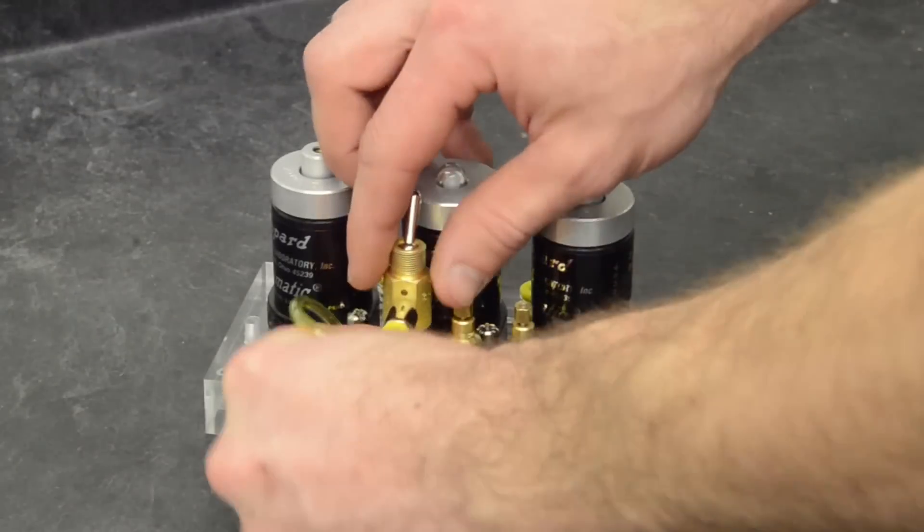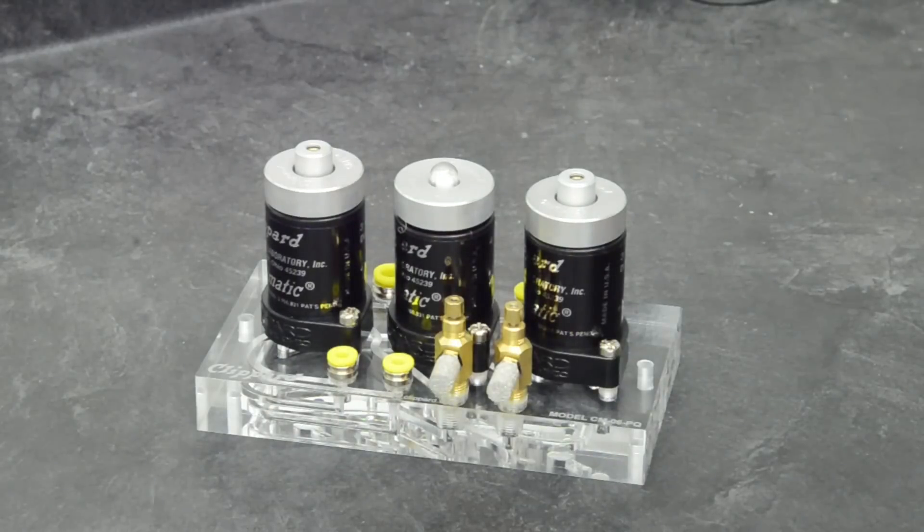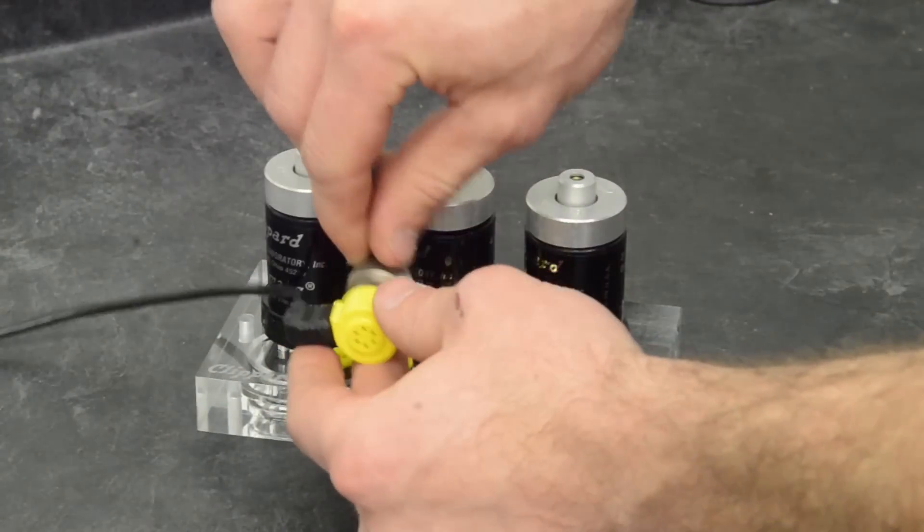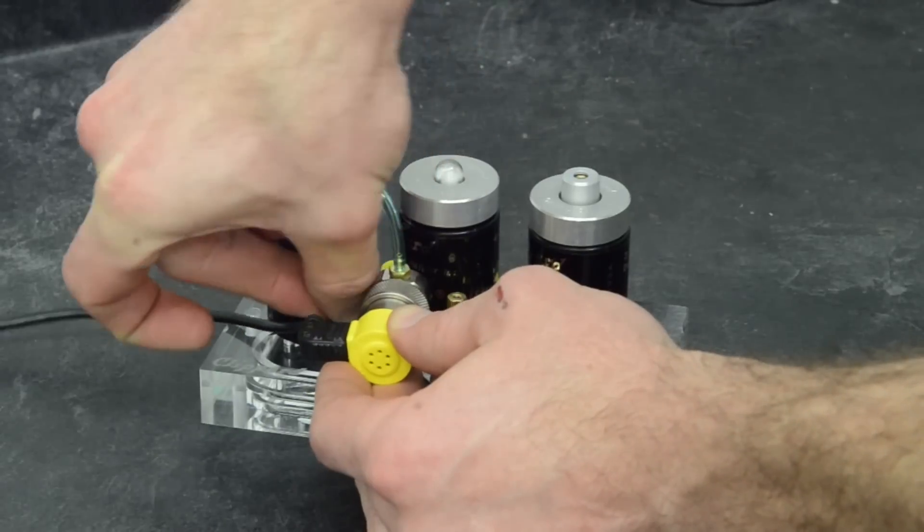The toggle valve is provided for the standard on-off function of the board but it can easily be removed and a pneumatic circuit can be used to turn the circuit on and off or an electronic valve can be used in conjunction with the PLC.